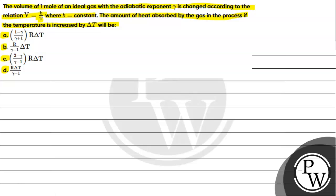To understand this question we need to understand the concept of the First Law of Thermodynamics. By the First Law, heat given to the system is utilized for two purposes: first, work done by the gas, and second, change in internal energy of the gas. We need to be clear that delta U equals n Cv delta T. Also, by Mayer's relation, Cp minus Cv equals R, and the adiabatic exponent gamma equals Cp over Cv.